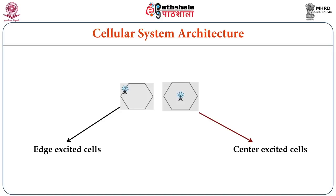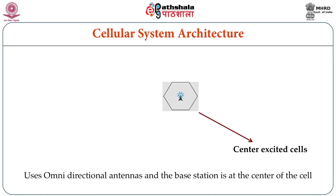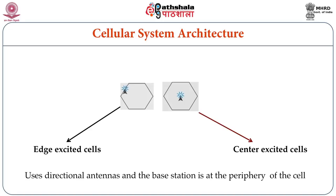In some situations, base stations are at the periphery of the cell. Depending on whether the base station is at the center or the periphery, the cells are known as center-excited cells or edge-excited cells. Center-excited cells use omnidirectional antennas with the base station at the center, whereas edge-excited cells use directional antennas with the base station at the periphery.